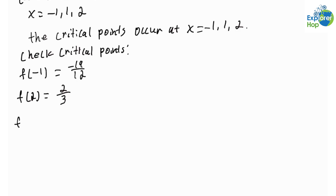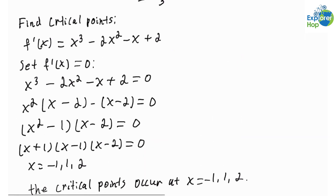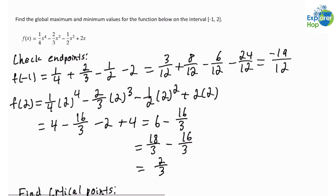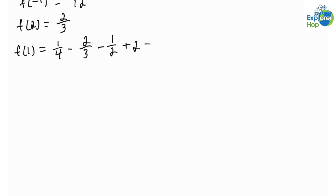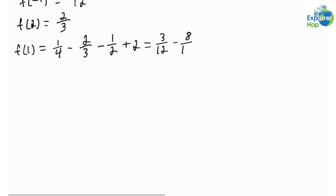Now let's evaluate f(x) at x = 1. So f(1) = 1/4 − 2/3 − 1/2 + 2, which equals 3/12 − 8/12 − 6/12 + 24/12, giving us 13 over 12.